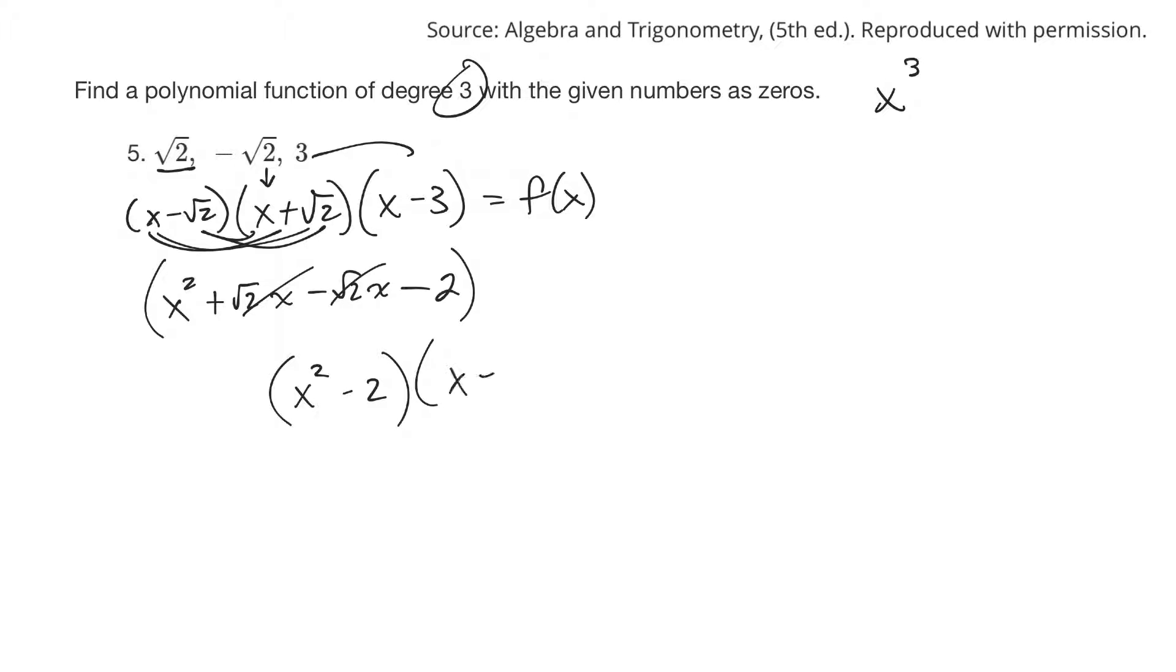Times x minus 3, let's FOIL out together: x cubed minus 3x squared minus 2x plus 6. So there would be my polynomial.